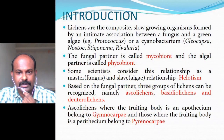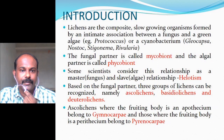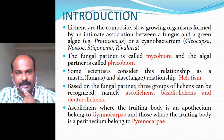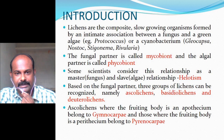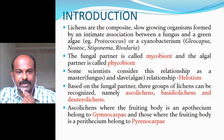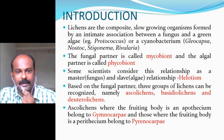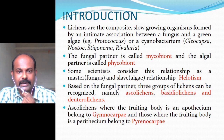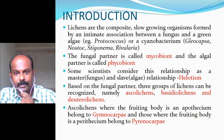Lichens are composite, slow-growing organisms formed by an intimate association between a fungus and a green alga or a cyanobacterium. Algae like Protococcus and cyanobacteria like Gloeocapsa, Nostoc, Stigonema, or Rivularia can come into association with the fungus to form the lichen thallus. The fungal partner is usually called the mycobiont and the algal partner is called the phycobiont.